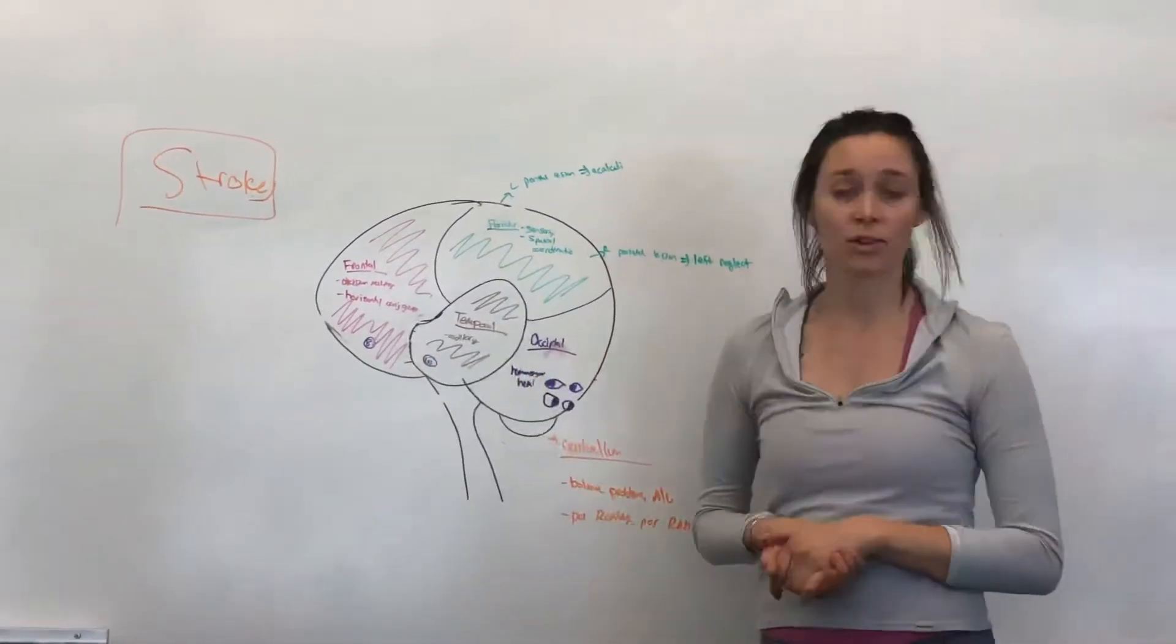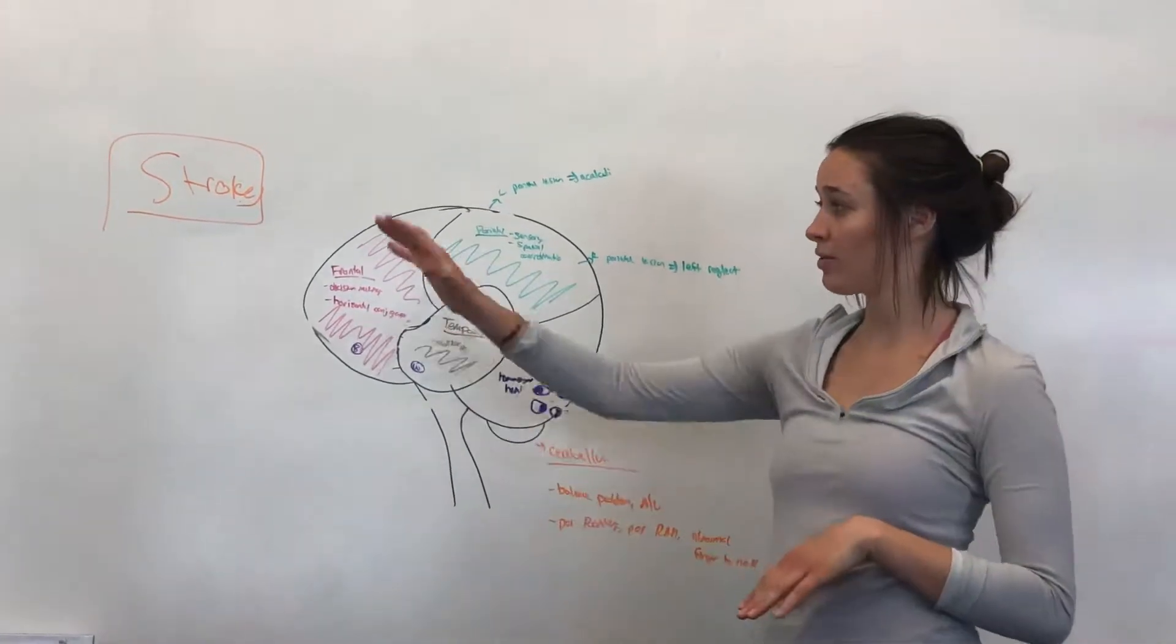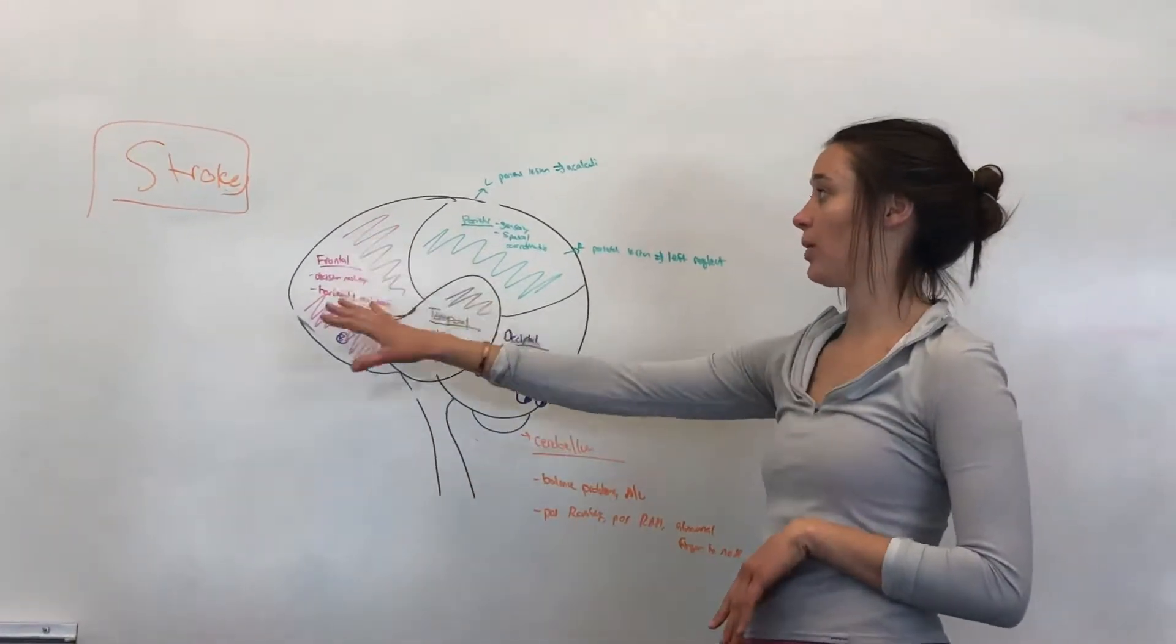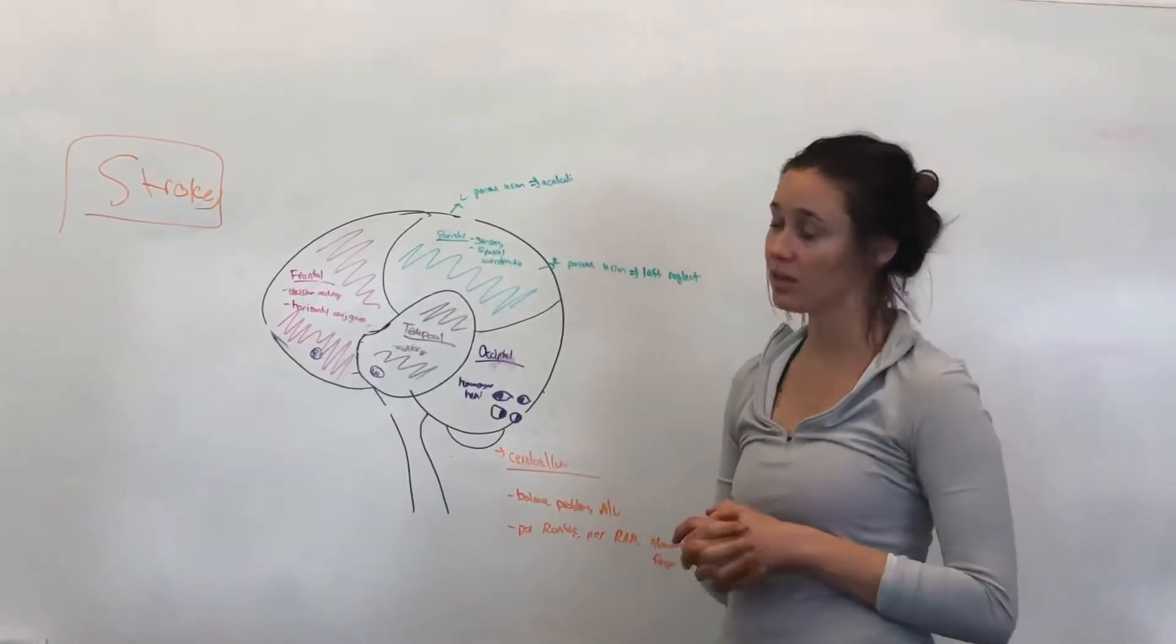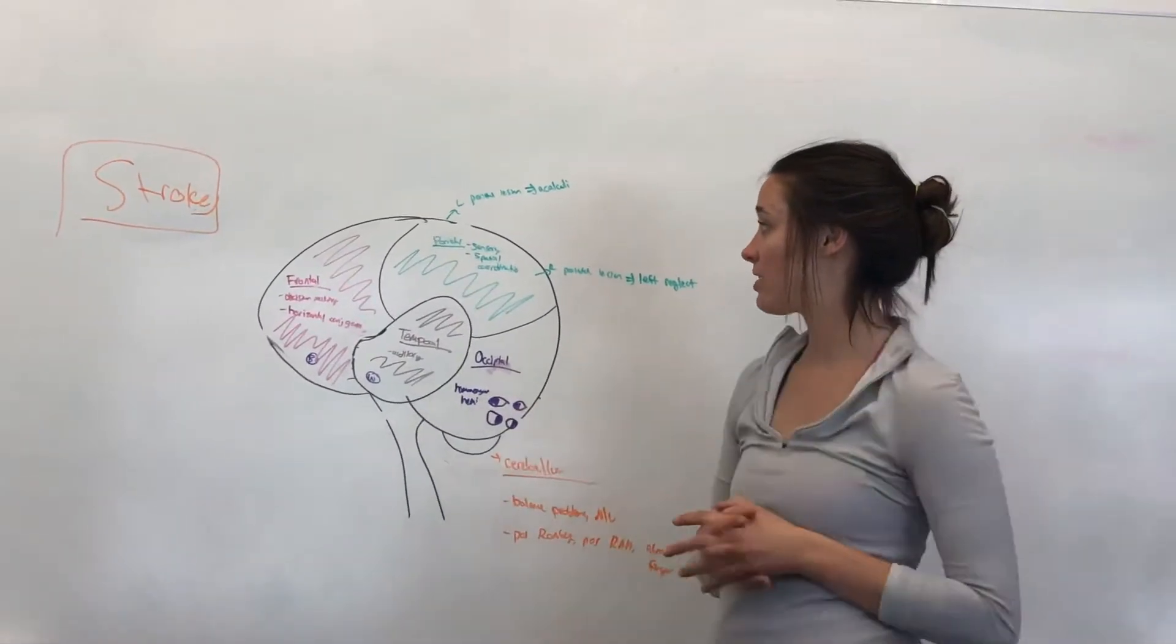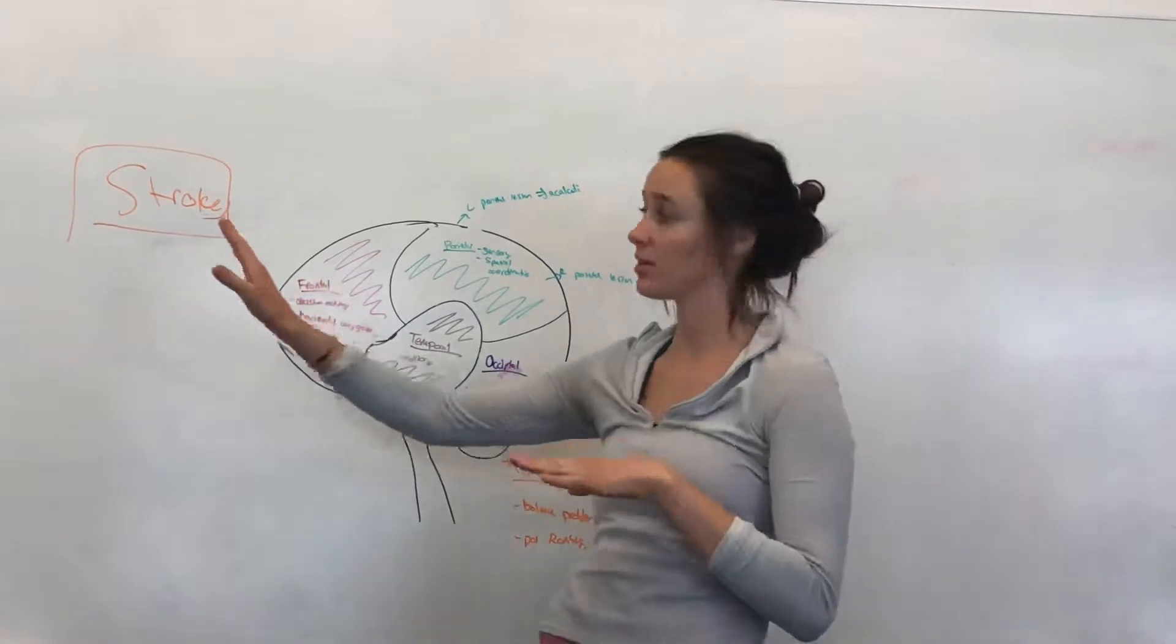But when we look at strokes, we know that there's two ways to look at it. You can kind of look at it from a vascular aspect, or you can look at kind of just what area of the cortex is affected. So I'm going to go over the areas of the cerebral cortex, and then Veronica's going to go over the vasculature.